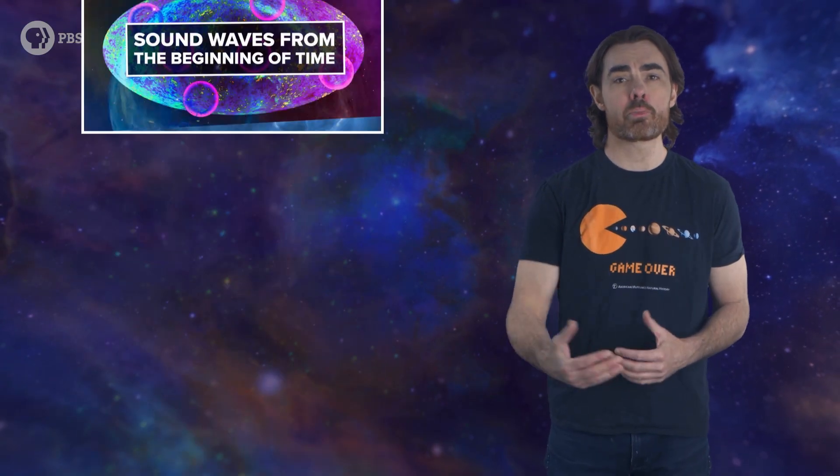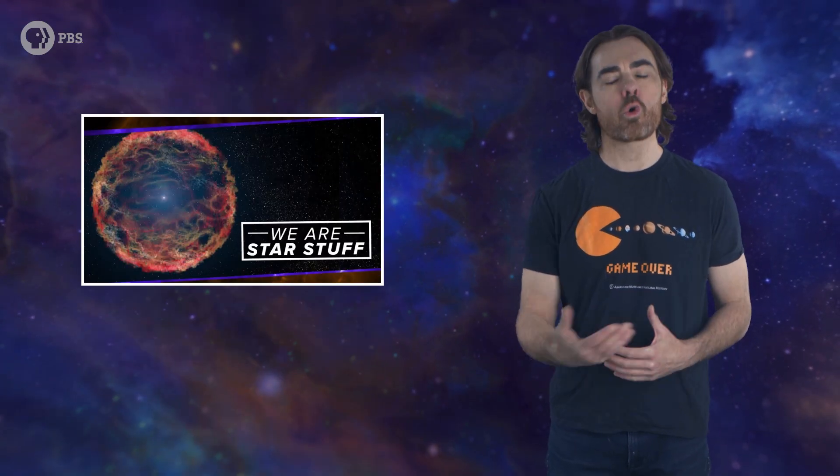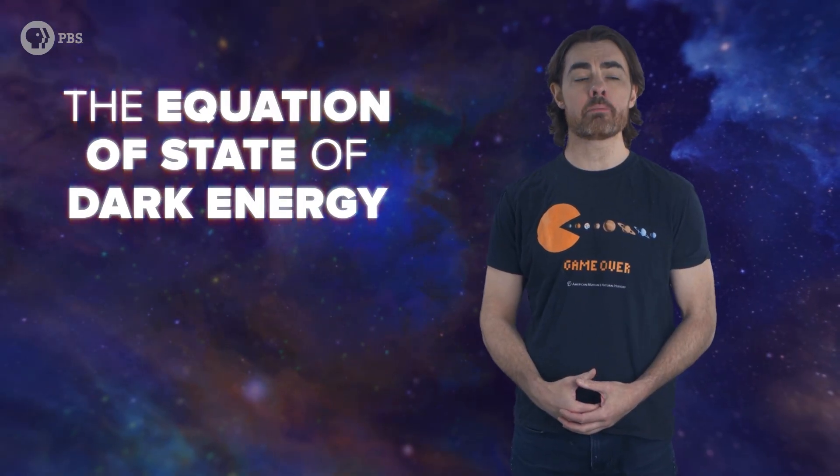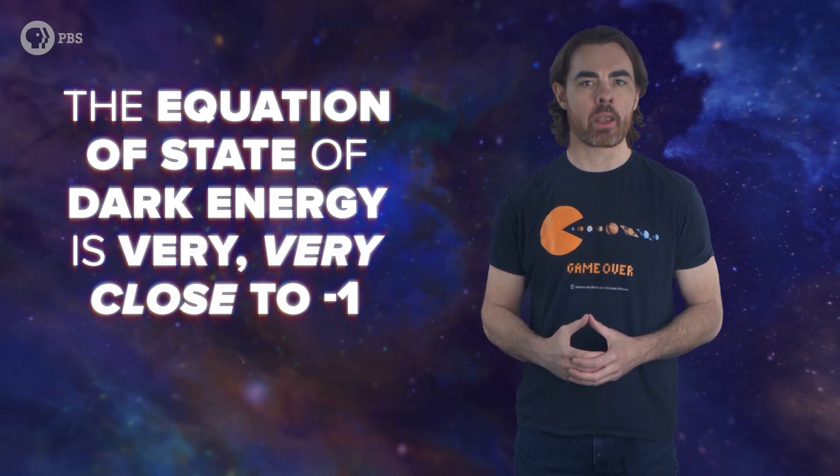Our efforts to understand the nature of dark energy are focused on measuring the value of this equation of state parameter thing. We can do that by combining all of the clues to dark energy's behavior. For example, in the patterns of the cosmic microwave background, in the baryon acoustic oscillations, and in supernovae, we've talked about all of these things before. Combined with a few other measures, these tell us that the equation of state of dark energy is very, very close to negative one.